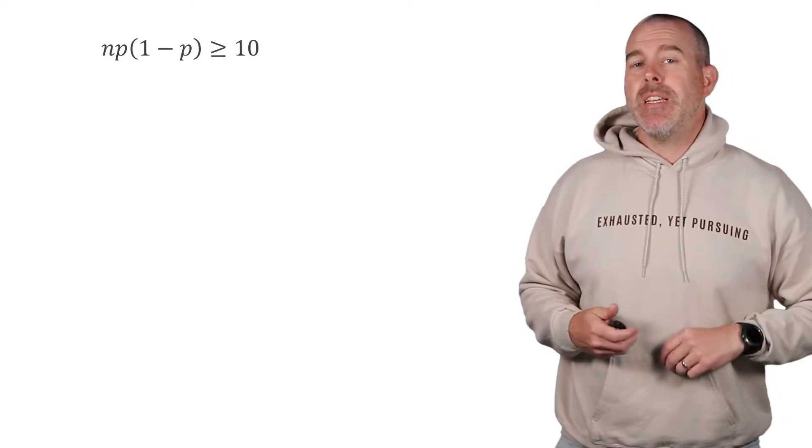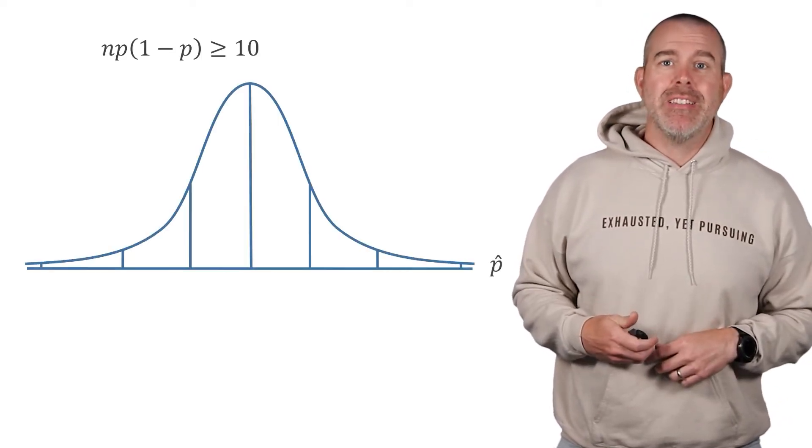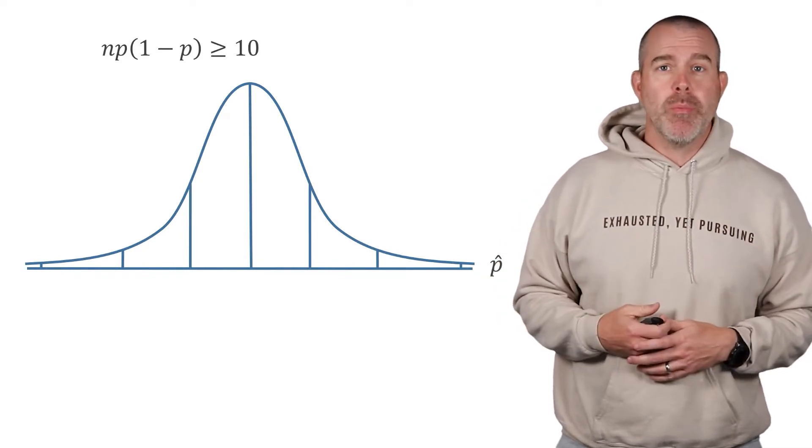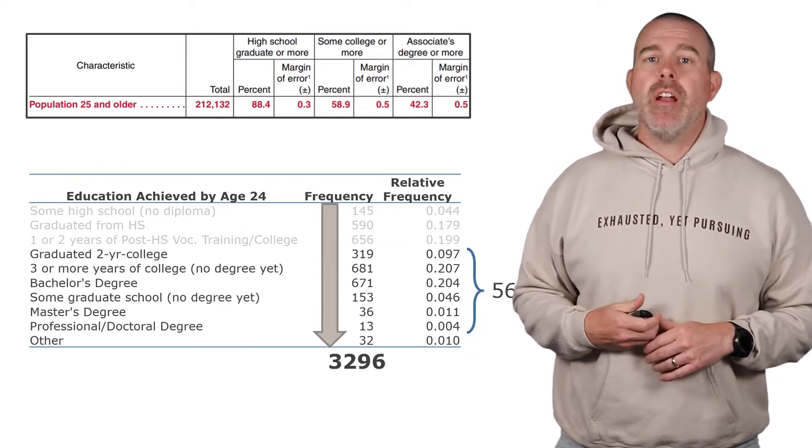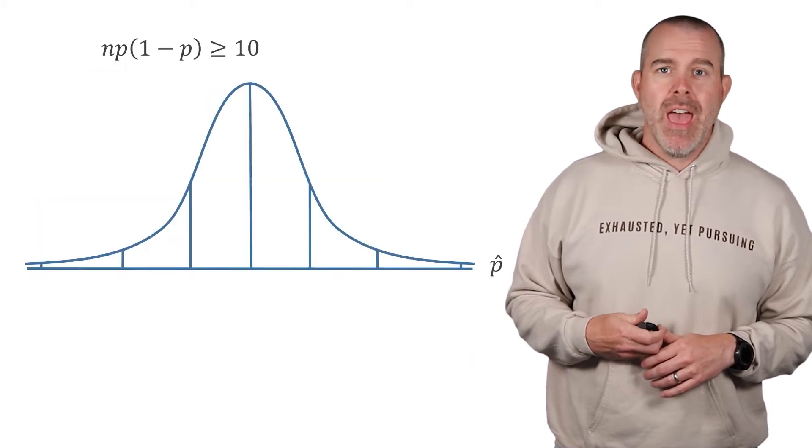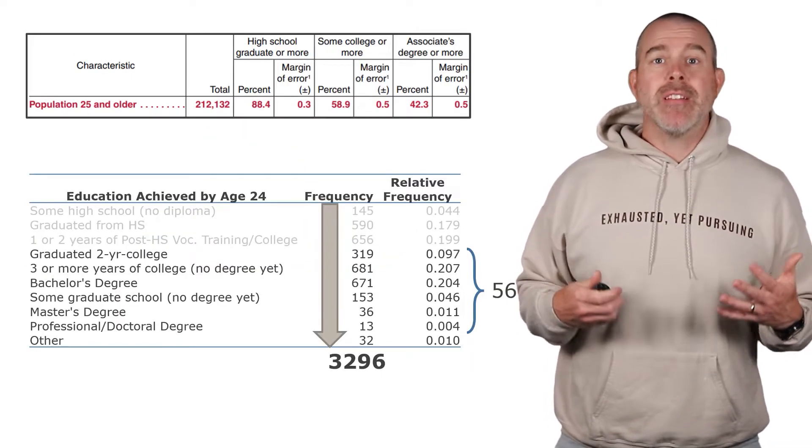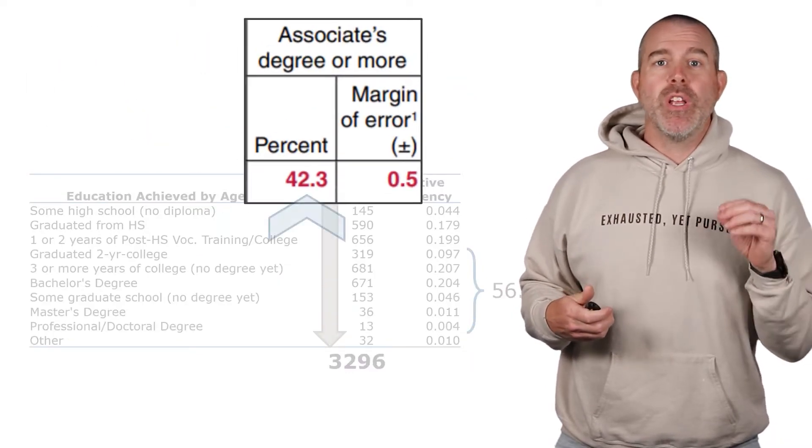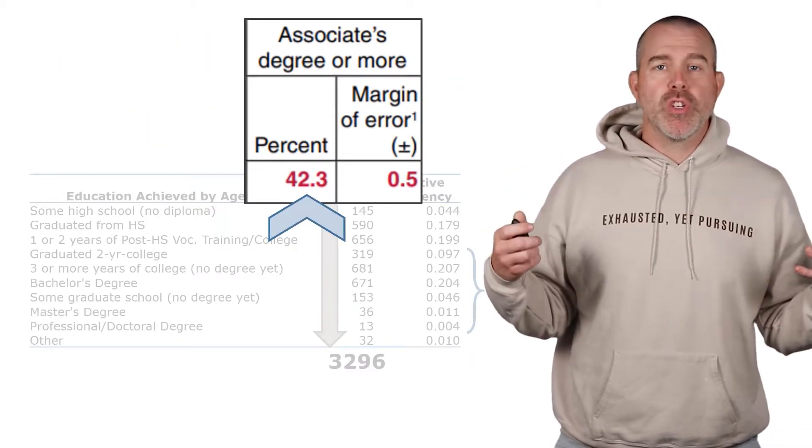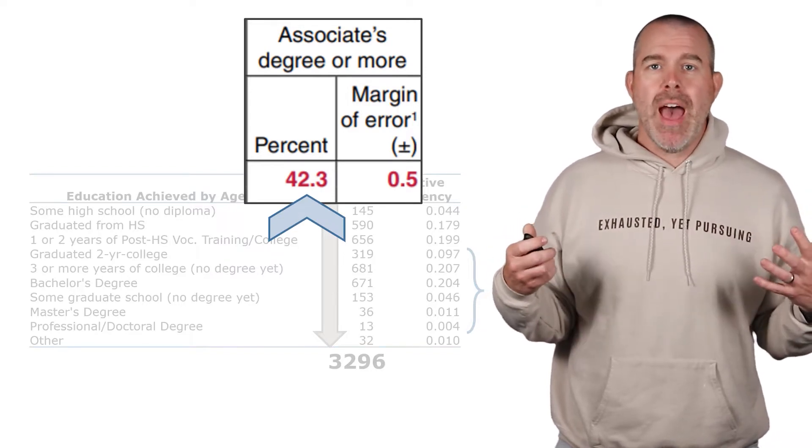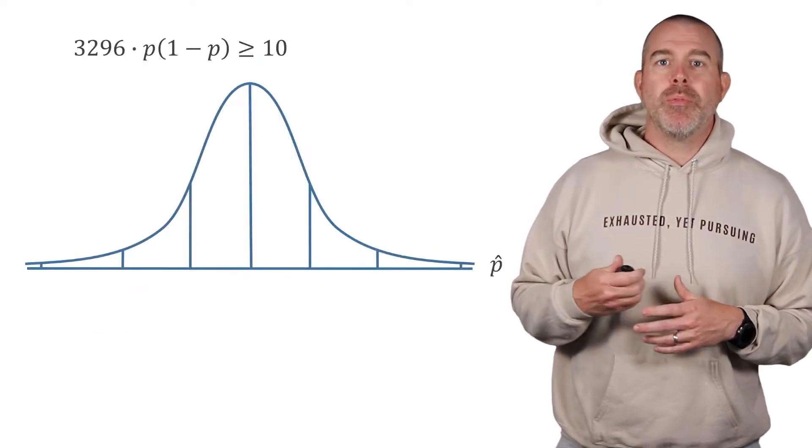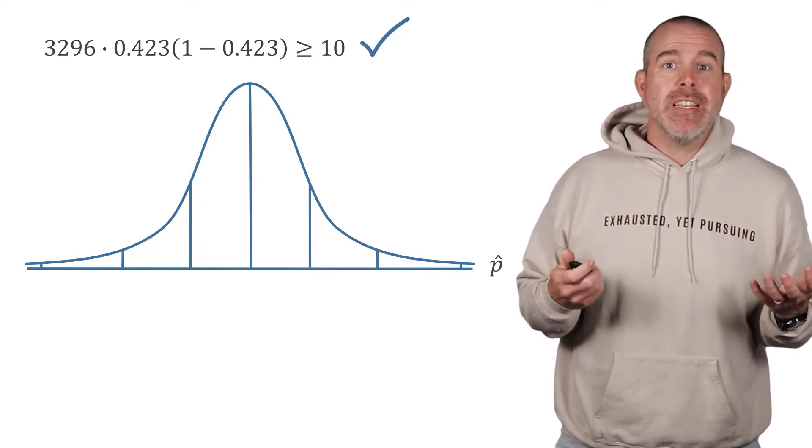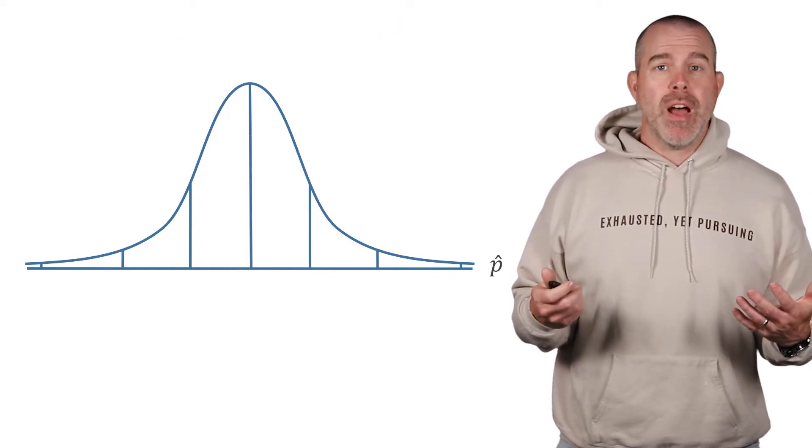What we want to do is investigate this difference and see if it has some statistical meaning. We're going to analyze the sample proportion. If we have n times p times 1 minus p, and that's at least 10, then our sample proportions should be approximately normally distributed. Let's look at the numbers. The total in our sample is 3,296, that's our n. The p, that's the population proportion, is 42.3%. We'll plug that in and do a check, and it does check out.